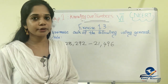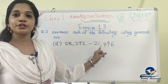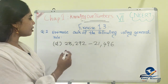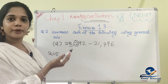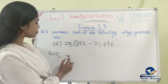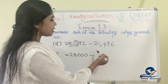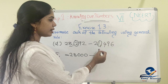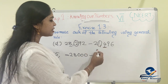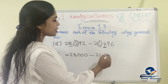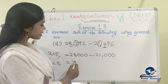Let's check the fourth question. The number is 28,292 minus 21,496. For 28,292, the thousands digit is 8 and the hundreds digit is 2, which is less than 5, so it rounds to 28,000. For 21,496, the thousands digit is 1 and the hundreds digit is 4, which is less than 5, so it rounds to 21,000. The estimated answer is 28,000 minus 21,000, which equals 7,000.